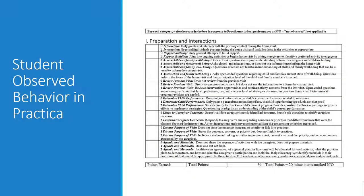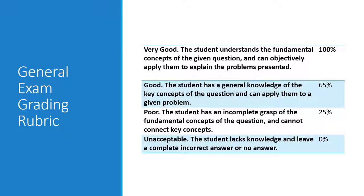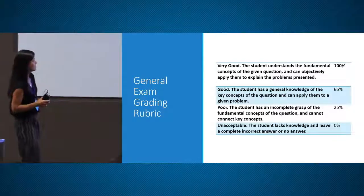There is student observed behavior in practica — this is one of Ann's rubrics. This is a general exam grading rubric I use sometimes in my exams just to say overall the quality of this work was very good, good, poor, and acceptable. This is more of a holistic example of a rubric — it's a little more general.